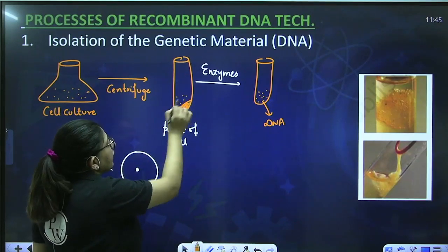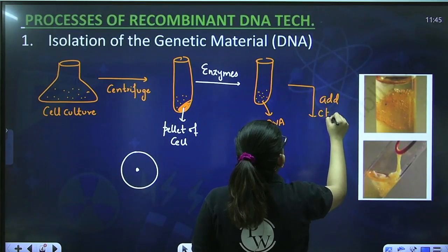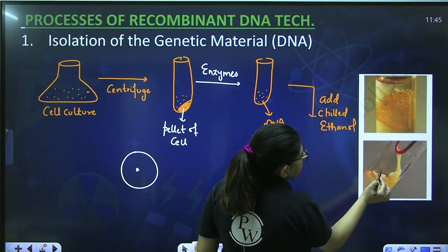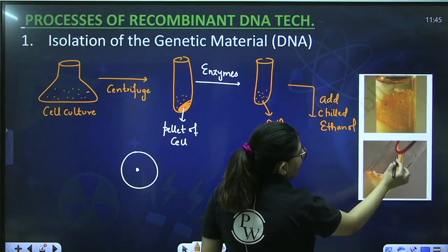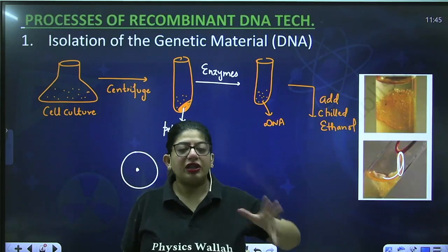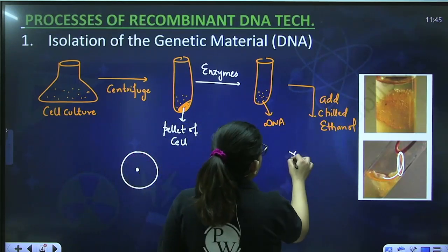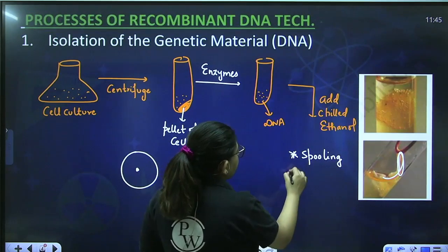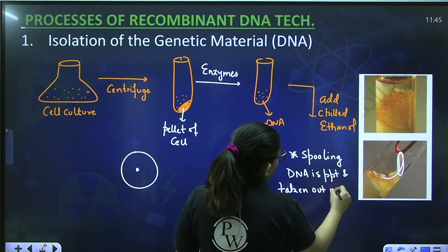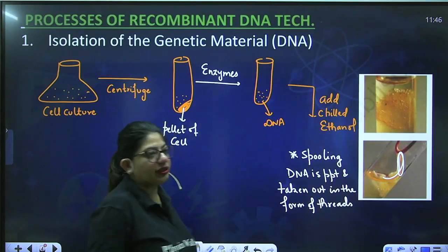The DNA is dissolved in solution — you can't visualize it directly. Then you add chilled ethanol. When you add chilled ethanol, the strands of DNA come out. This process — where you add chilled ethanol to precipitate the DNA and it comes out in the form of threads — is called spooling. In spooling, the DNA is precipitated and taken out in the form of threads.